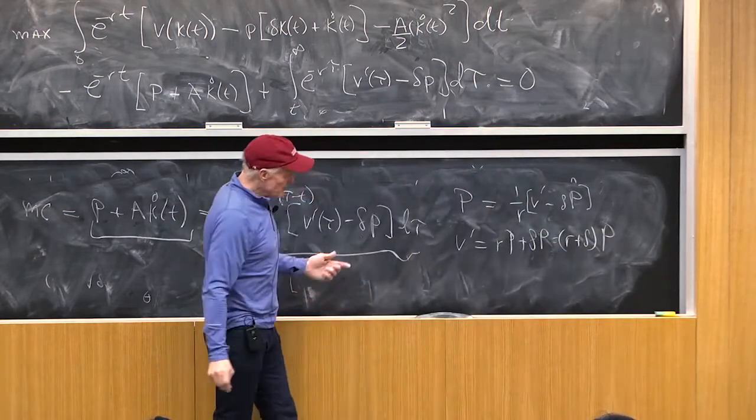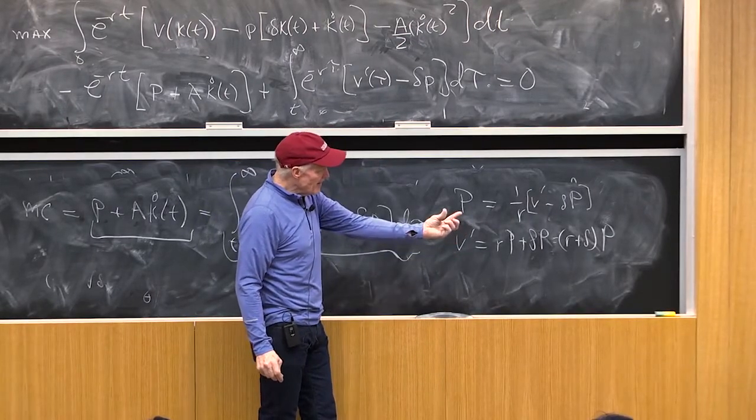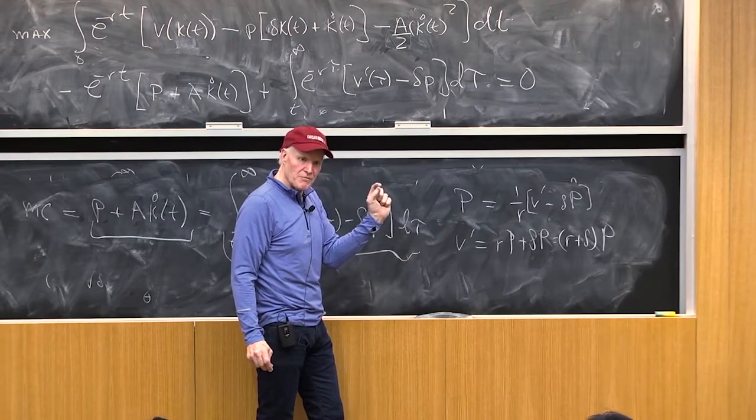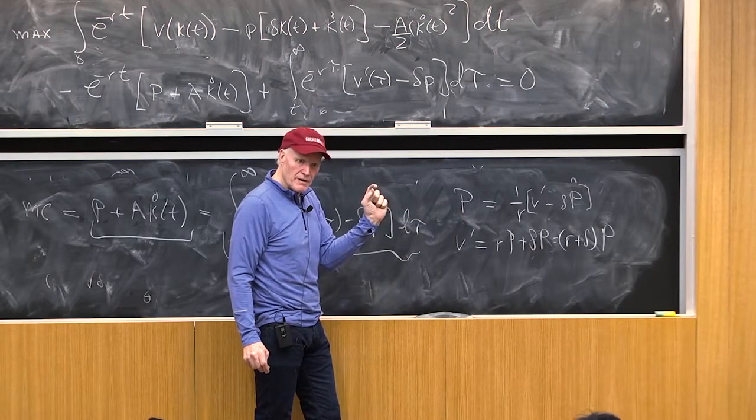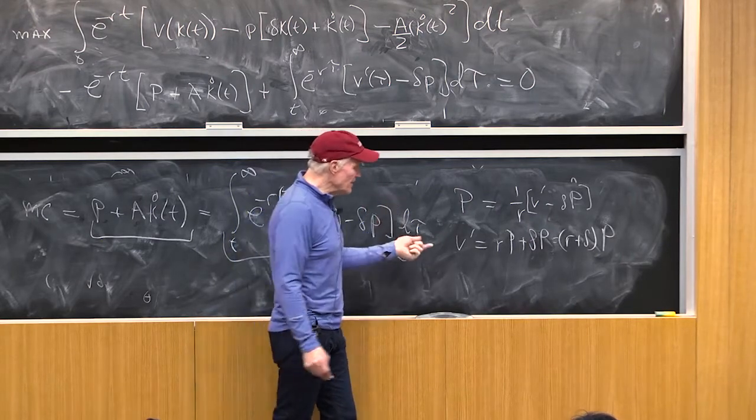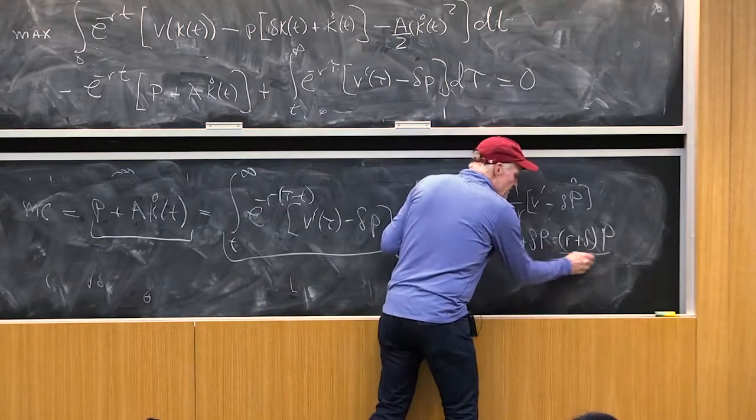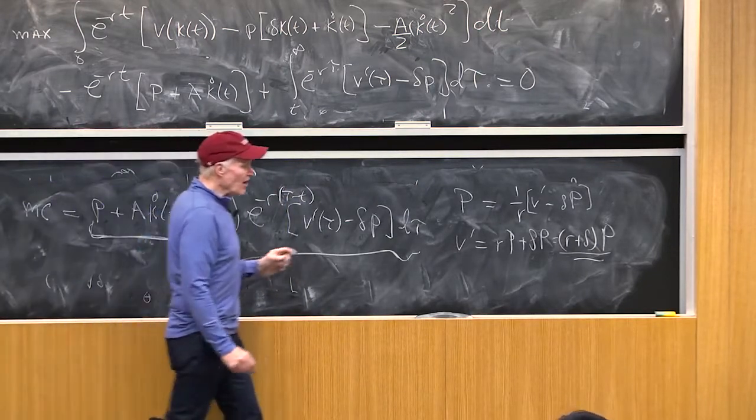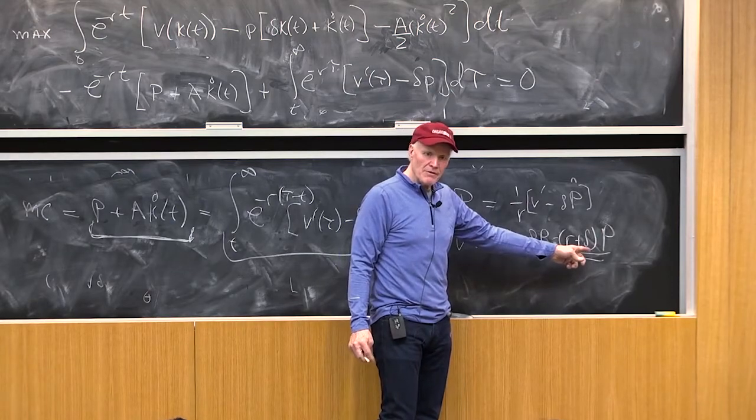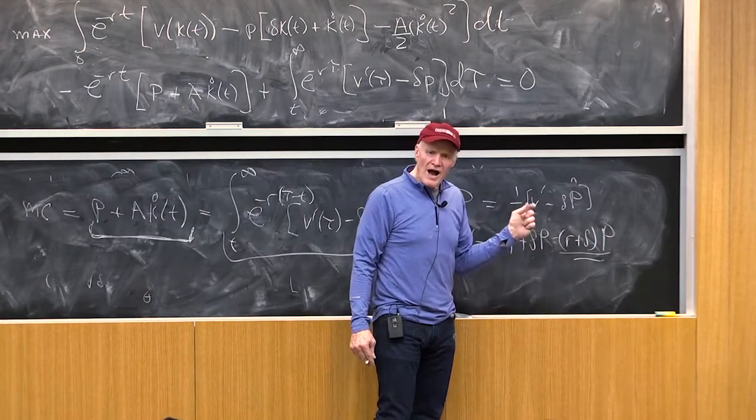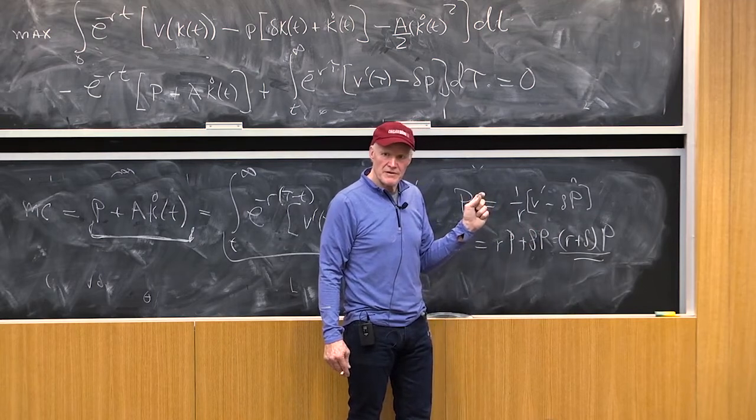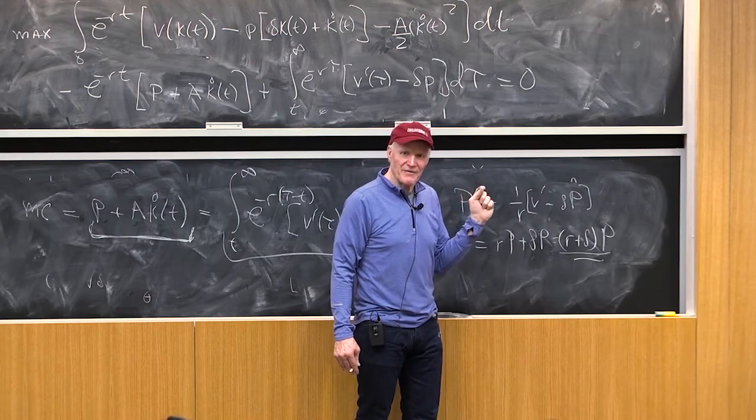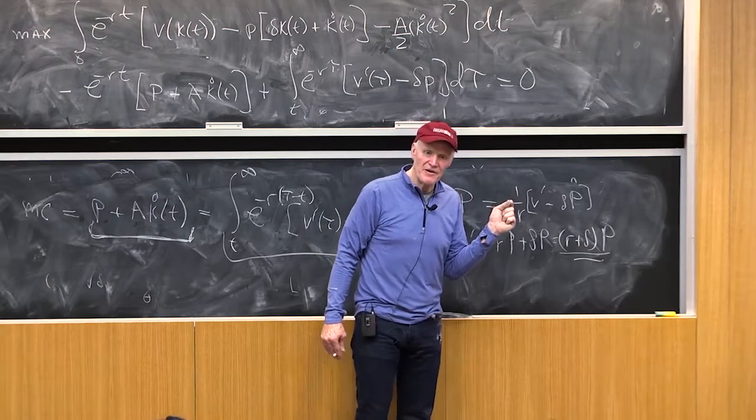Which is of course saying in the long run there's a perfectly elastic supply of capital. That's the big difference with the other model that I put on the board. The big difference with the other model is this model now, even though it has short run upward sloping supply of capital, has long run perfectly elastic supply of capital.